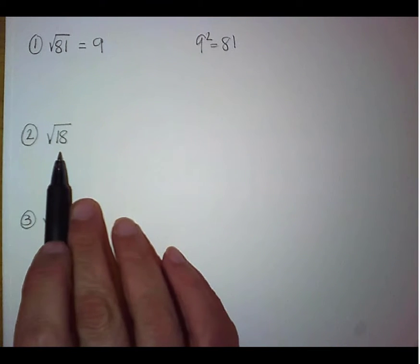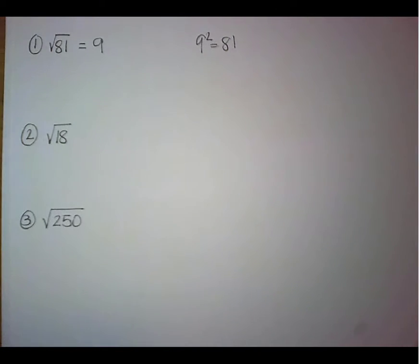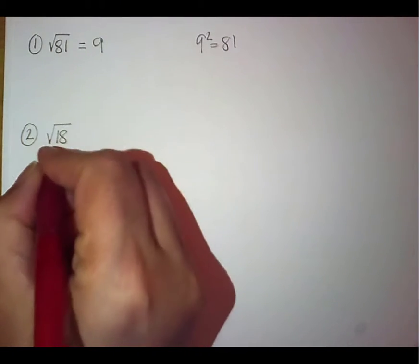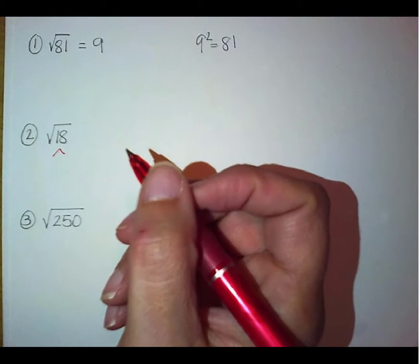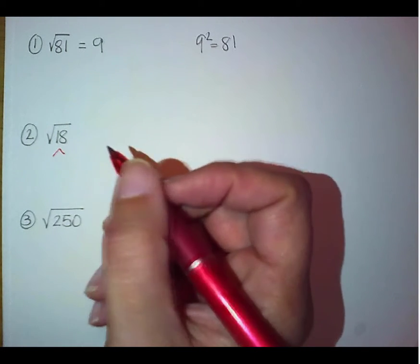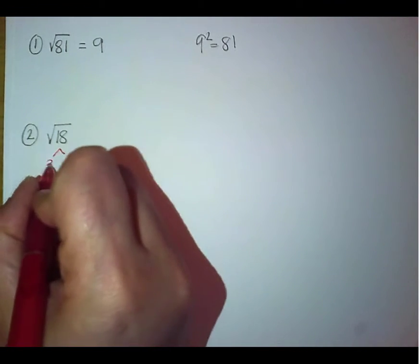Now the second one, 18, is not perfect. There's nothing that multiplies times itself to give me 18. So I do need to start breaking him down. Again, remember, it doesn't matter how you start to break him down as long as you go to prime numbers. So we could use 3 and 6.